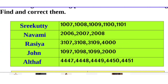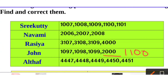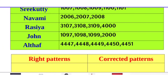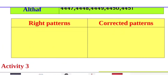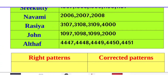That's right. 1097, 1098, 1099, and then the next is 1100 — that is correct. 4447, 4448, 4449, 4450, 4451 — this is correct. These are the corrected patterns — all verified as correct.